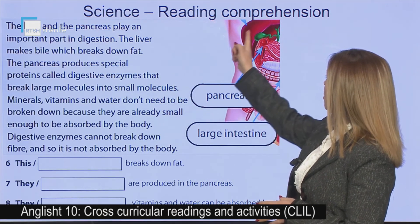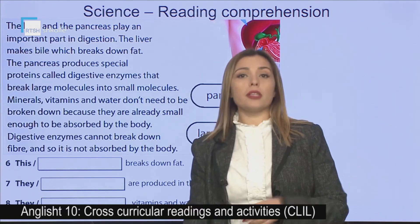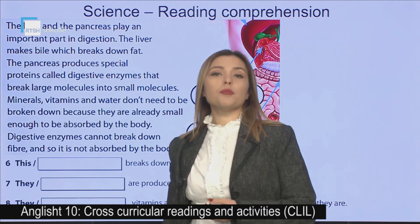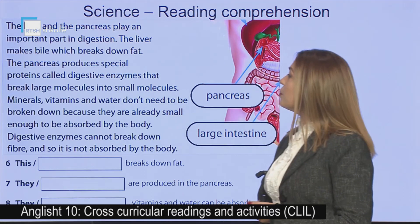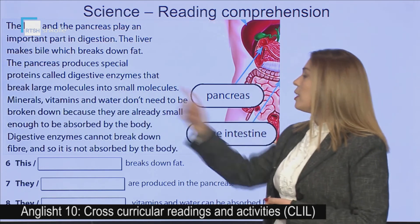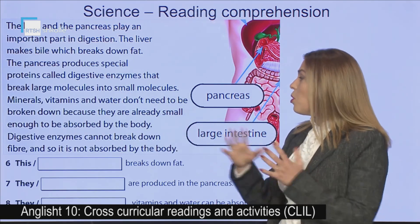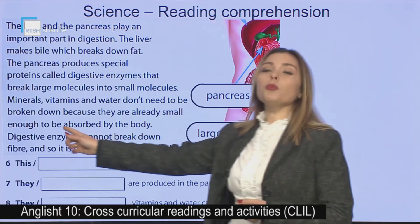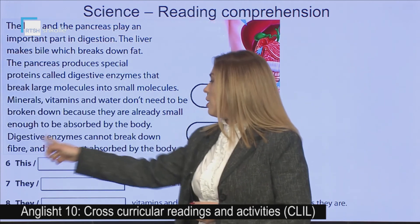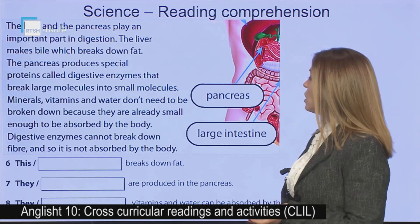The liver and the pancreas play an important part in digestion. The liver makes bile, which breaks down fat — this is a sort of liquid that helps in digestion. The pancreas produces special proteins called digestive enzymes that break large molecules into smaller molecules. Minerals, vitamins and water don't need to be broken down because they are already small enough to be absorbed by the body. Digestive enzymes cannot break down fiber, and so it is not absorbed by the body.